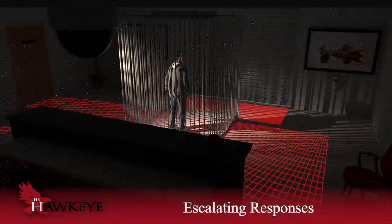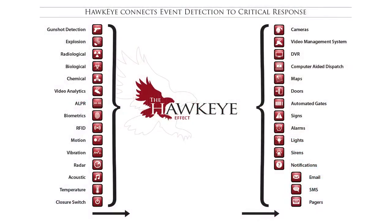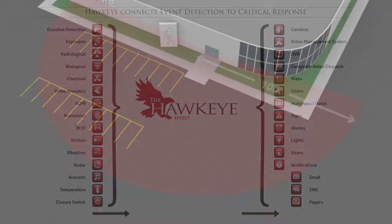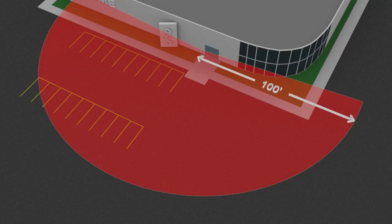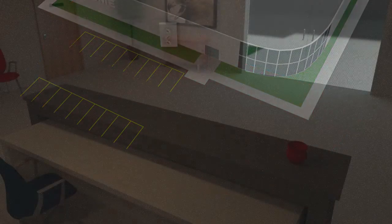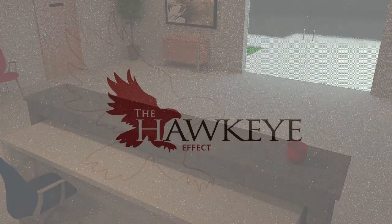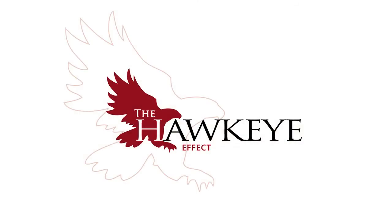The Hawkeye Effect directs automatic responses to security incidents according to your predetermined procedures. Whether protecting large, complex, multi-building environments, or securing smaller spaces, the Hawkeye Effect gives you the situational intelligence to control your security systems seamlessly.